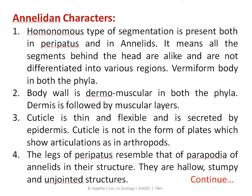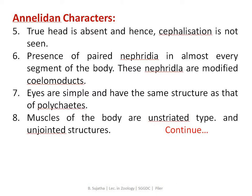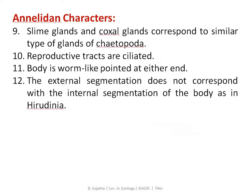Summarizing annelid characters: homonome type of segmentation; body wall is dermo-muscular; cuticle is thin and flexible; legs resemble parapodia — hollow, stumpy and unjointed structures; head is absent and cephalization is not seen; each segment has a pair of nephridia; eyes are simple; slime glands and poison glands are similar; reproductive tracts are ciliated; body is worm-like pointed at either end; and external segmentation does not correspond with internal segmentation.